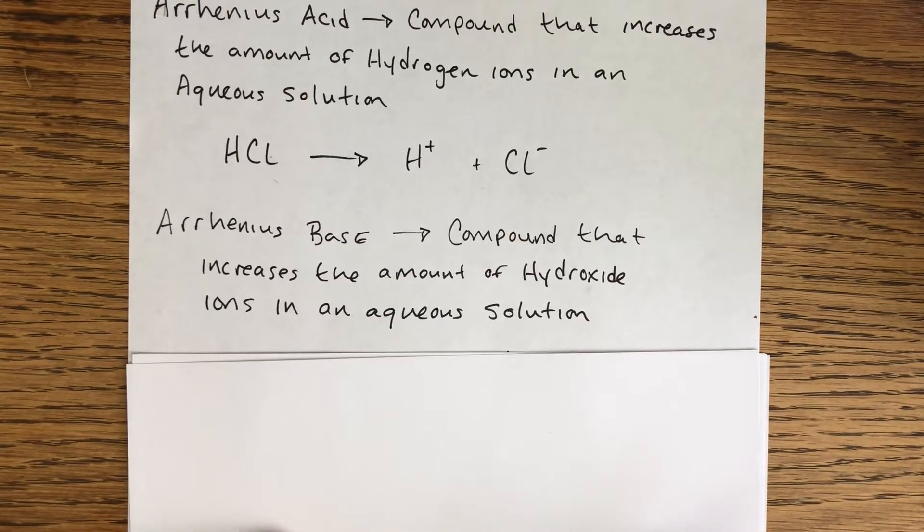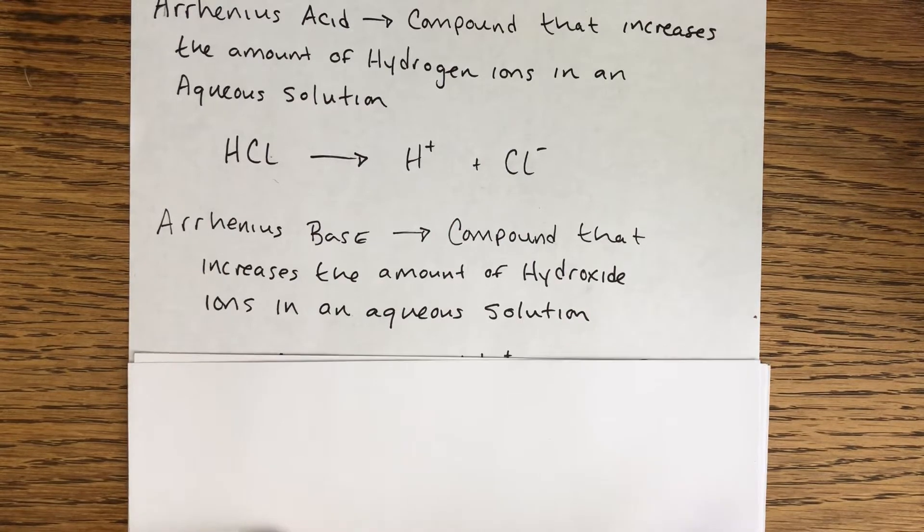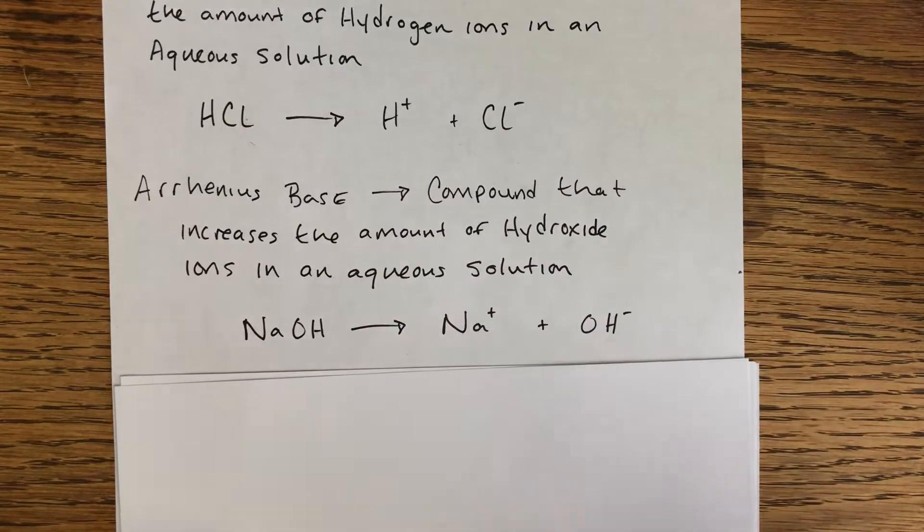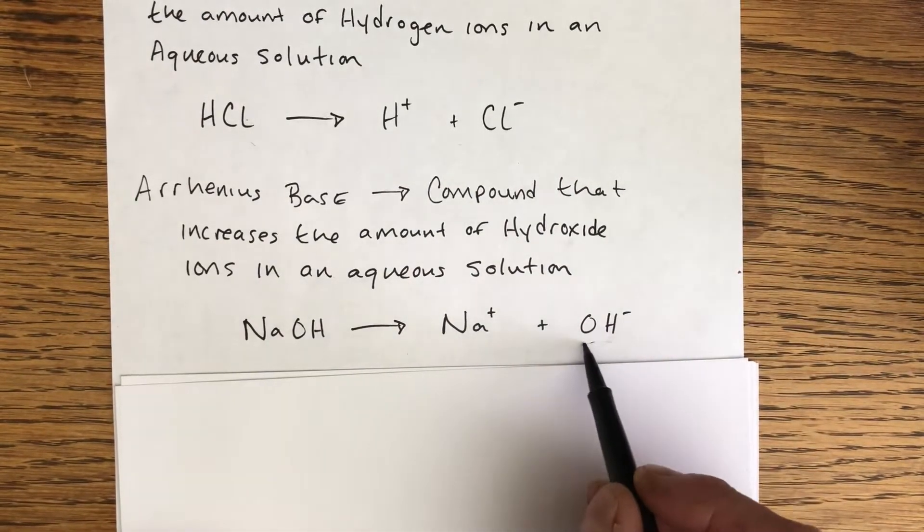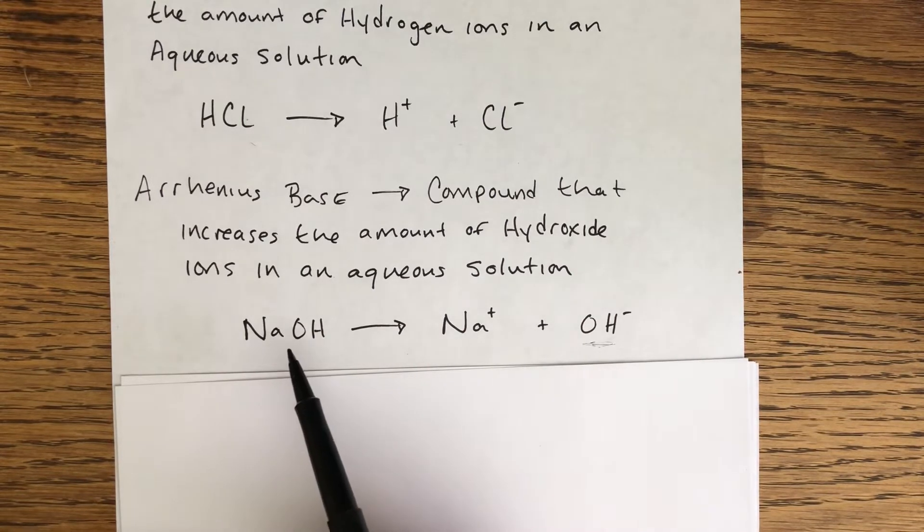An Arrhenius base is kind of the same but with a different chemical compound. It's a compound that increases the amount of hydroxide ions in an aqueous solution. Hydroxide is a polyatomic ion from our past that hopefully you know. It's this one right here, the hydroxide.